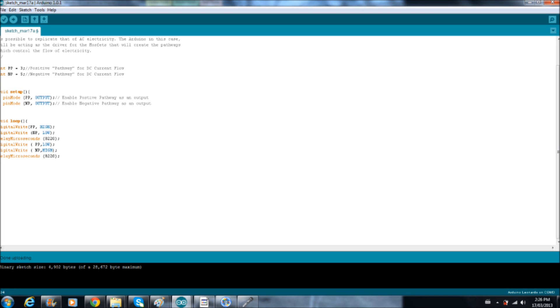In this case, we defined our PP, which is our positive pathway for DC current flow, as pin terminal number three on my Arduino. For the negative pathway, it was pin number five.